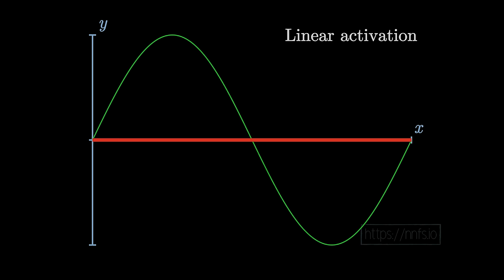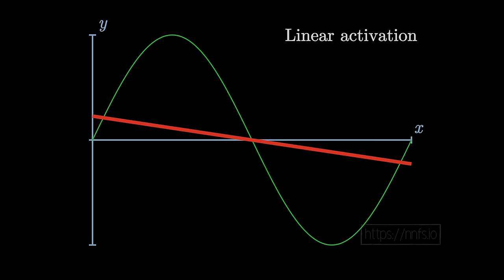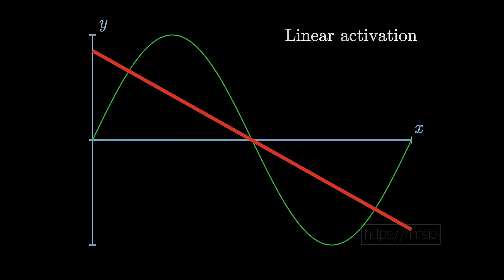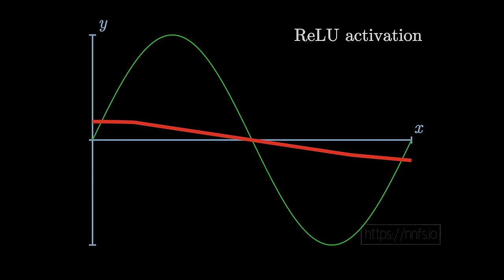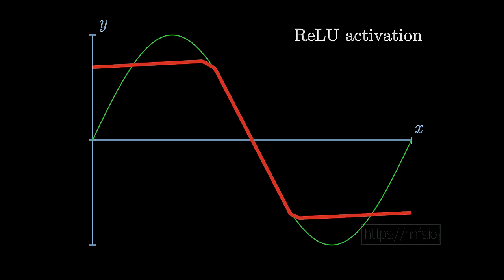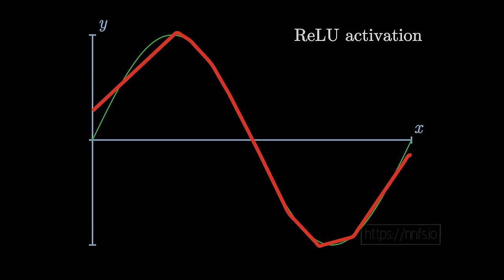If we take a linear activation function neural network and try to fit a non-linear function like a sine wave, it simply can't do it. The green line is the sine wave, the red line is the neural network — it just can't fit. We need a non-linear activation function. Using the same two hidden layers of eight neurons each but with ReLU, we get a much better fit, even if not perfect because the network is small.